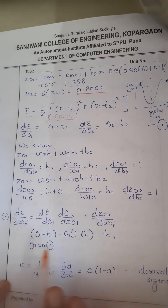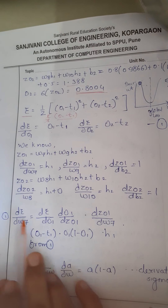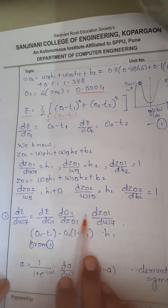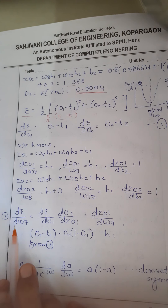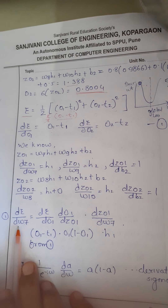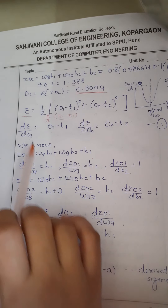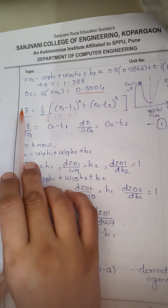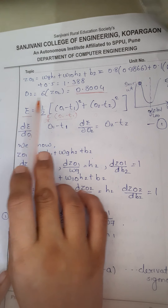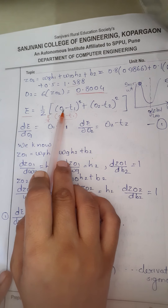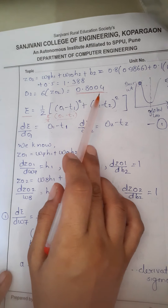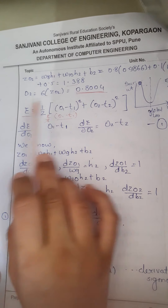If you understand this, you understand everything. As I said, we are using chain rule here. Now I want to find the derivative with respect to W7. If you check the formula of dE — the error function — it depends upon O1 and it depends upon O2.